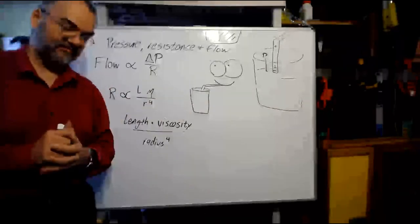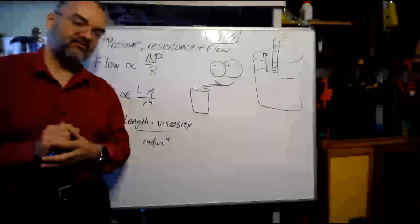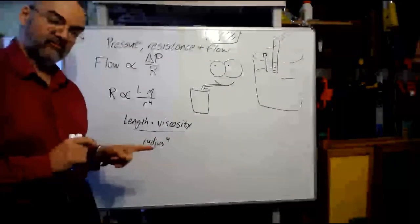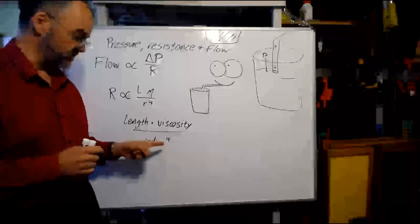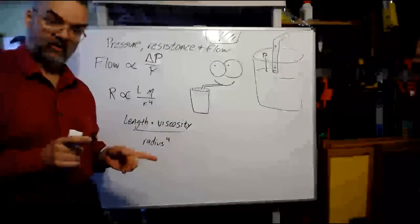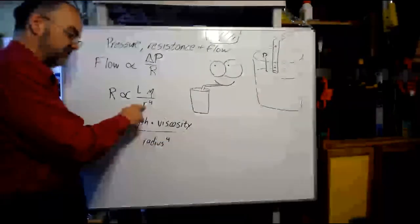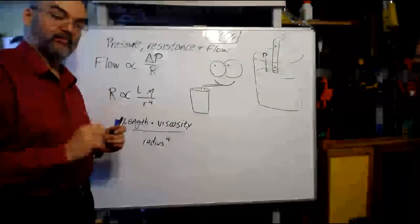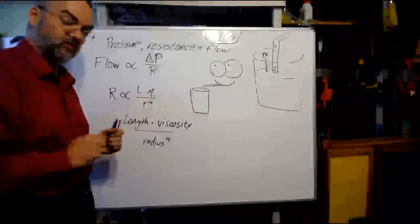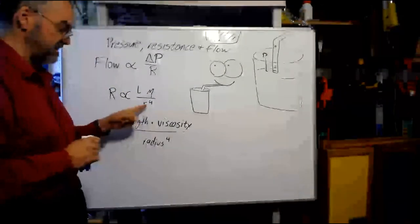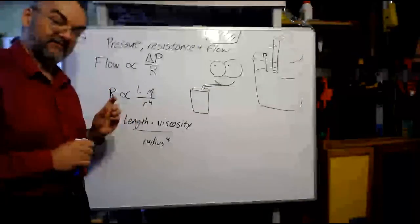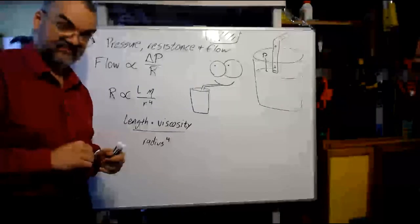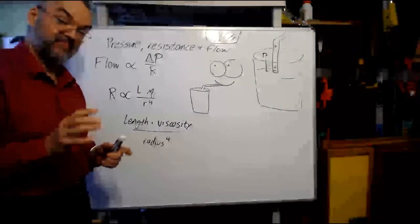But it's even more than that. Changes in radius end up being very, very important. Any change you make in the radius, the way the physics works out, you raise that change to the fourth power. So in other words, if I double the radius, the effect on resistance is 2 to the fourth power, 2 times 2 times 2 times 2, which is 16. Doubling the radius reduces the resistance by a factor of 16, which will increase the flow by a factor of 16. So changes in radius make a big, big difference to flow.